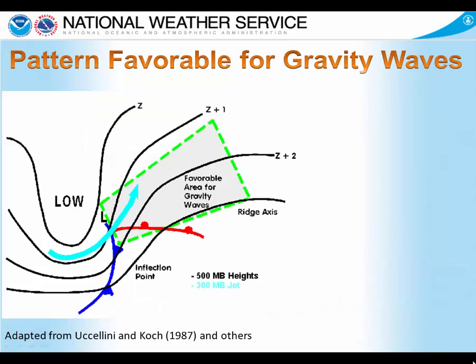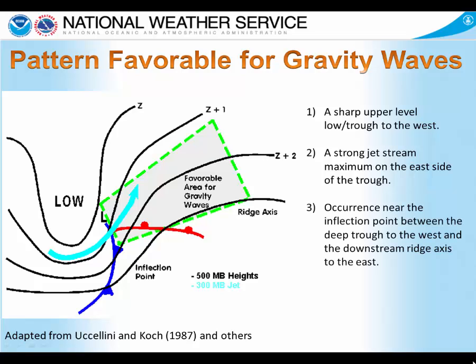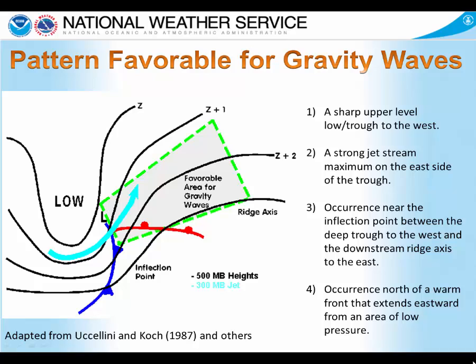Let's look at one pattern that's favorable for the development of gravity waves based on research. The first thing we look for is a strong mid-level low-pressure trough to the west of a developing surface low, shown by the solid curved black lines. The second is a strong jet stream maximum on the east side of the trough, shown by the cyan arrow. Next, we want to find where the inflection point is between the upper-level low to the west and the corresponding ridge axis to the east. Finally, we're looking for an area north of a surface warm front extending eastward from a low, and the result is the shaded area shown in the graphic.